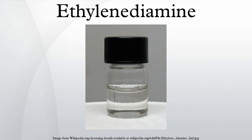Role in polymers: Ethylenediamine, because it contains two amine groups, is a widely used precursor to various polymers. Condensates derived from formaldehyde are plasticizers. It is widely used in the production of polyurethane fibers. The PAMAM class of dendrimers are derived from ethylenediamine. The bleaching activator tetraacetylethylenediamine is also generated from ethylenediamine.